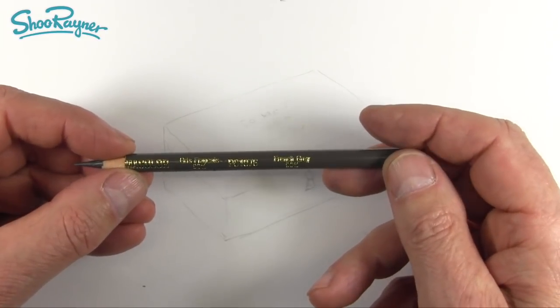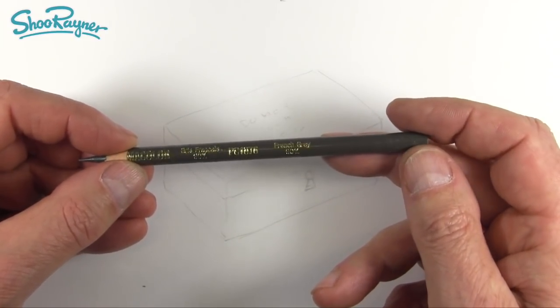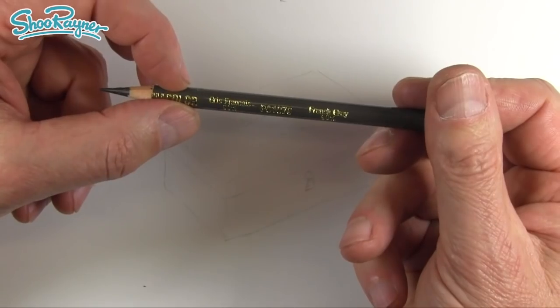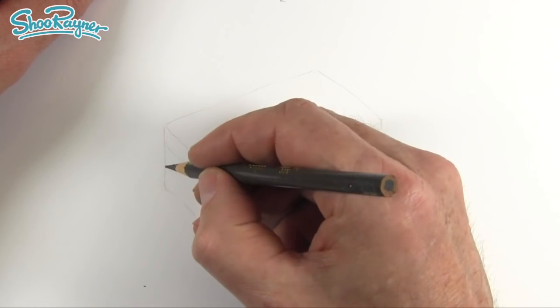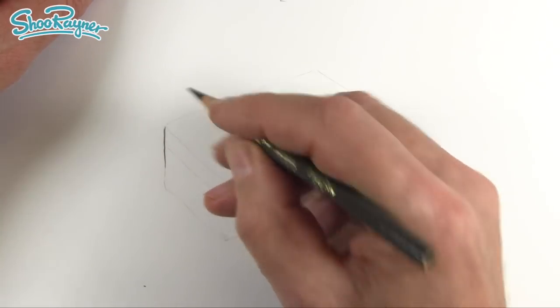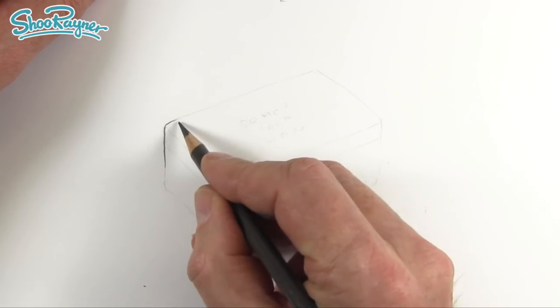I'm going to be using a Prismacolor. This is a French gray, 90%. This is a colored pencil. So it's a wax based colored pencil. And I like it because when I do watercolor on top, it doesn't smudge.